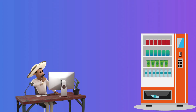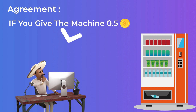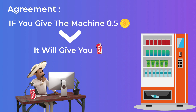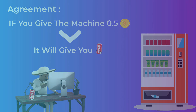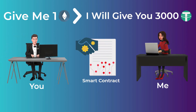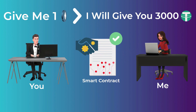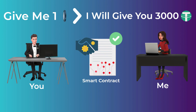A snack vending machine is a very simple form of a smart contract. The agreement is that if you give the machine half a dollar, it automatically gives you a can of Coke. We can make an agreement that says if you give me one Ethereum, then I will give you 3000 Tether tokens. You lock in the Ethereum, I lock in my 3000 Tether tokens in the same smart contract, and the agreement executes automatically — you get the Tether tokens and I get the Ethereum.